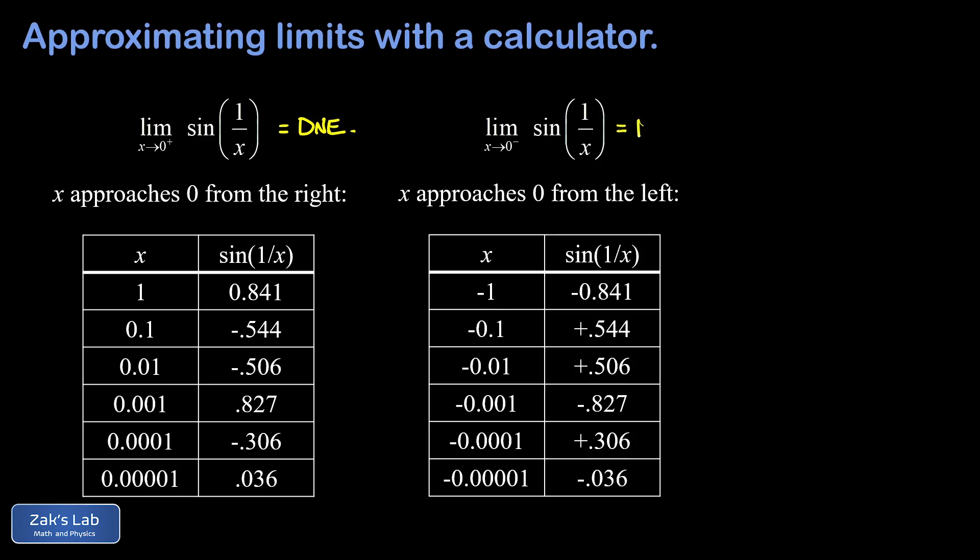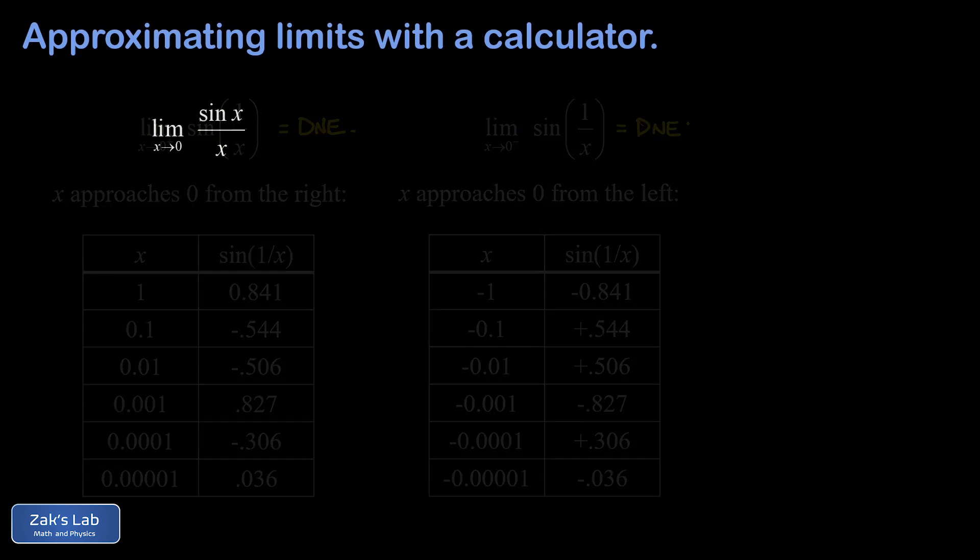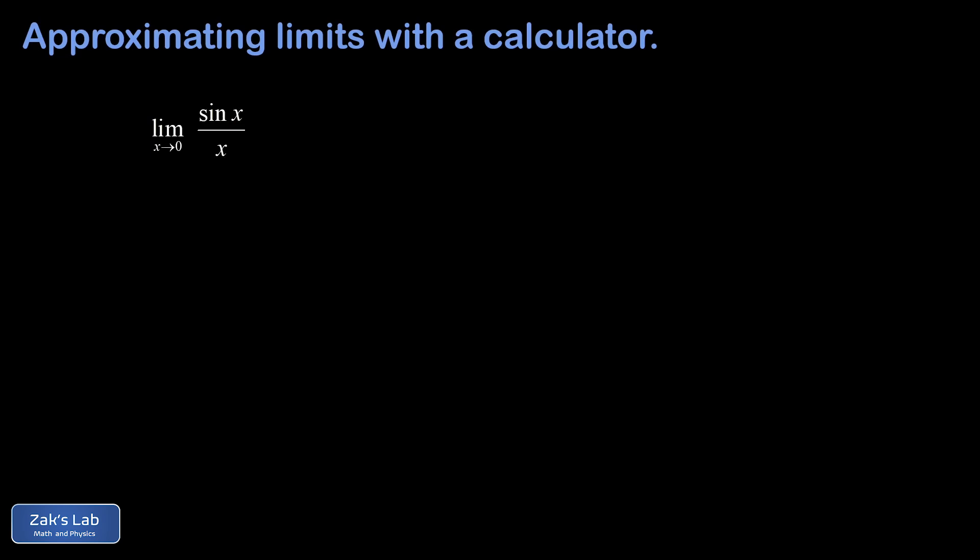The second limit we're going to test numerically is the limit as x goes to 0 of sine x over x, and the value of this limit isn't obvious. In fact, we'll prove this limit in a later video and I'll post a link to that video at the top when it's ready. And that proof requires some pretty sophisticated machinery. And the difficulty here is that the numerator is getting closer and closer to 0 because the sine of 0 is 0, but the denominator is also getting close to 0.